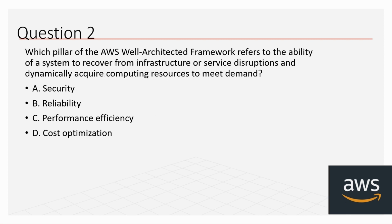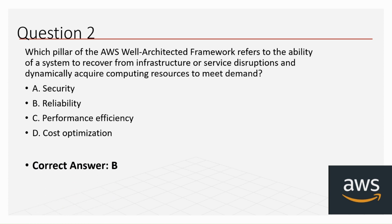The next question: which pillar of the AWS Well-Architected Framework refers to the ability of a system to recover from infrastructure or service disruptions and dynamically acquire computing resources to meet demand? The correct answer is Reliability.